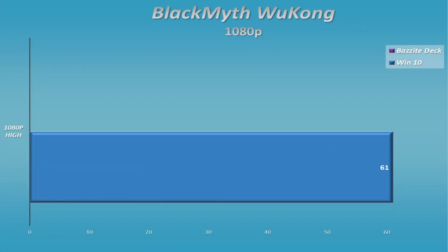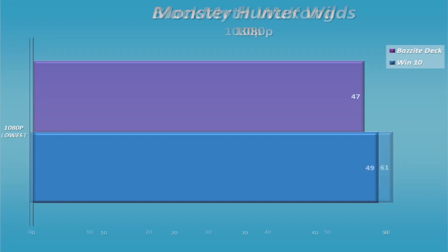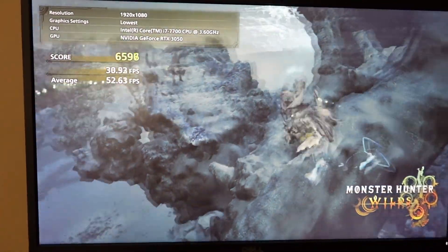Black Myth Wukong would not run at all on Bazzite. What did surprise me is that running 1080p high on Windows got us about 60 frames per second — that was a big surprise. I was not surprised with Monster Hunter Wilds; that ended up right back to the same pattern, just a few frames different between the Bazzite version and the Windows 10 version.